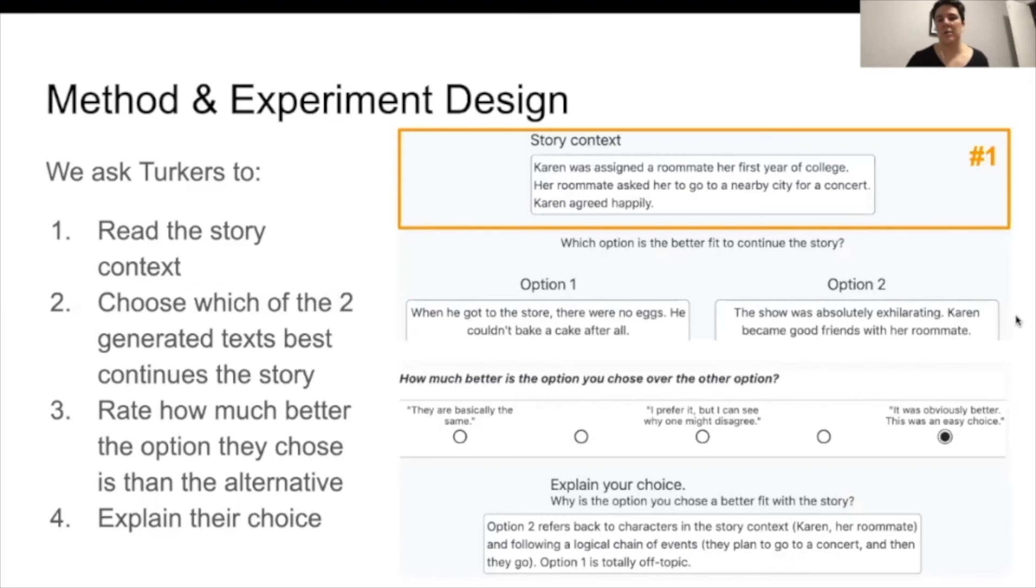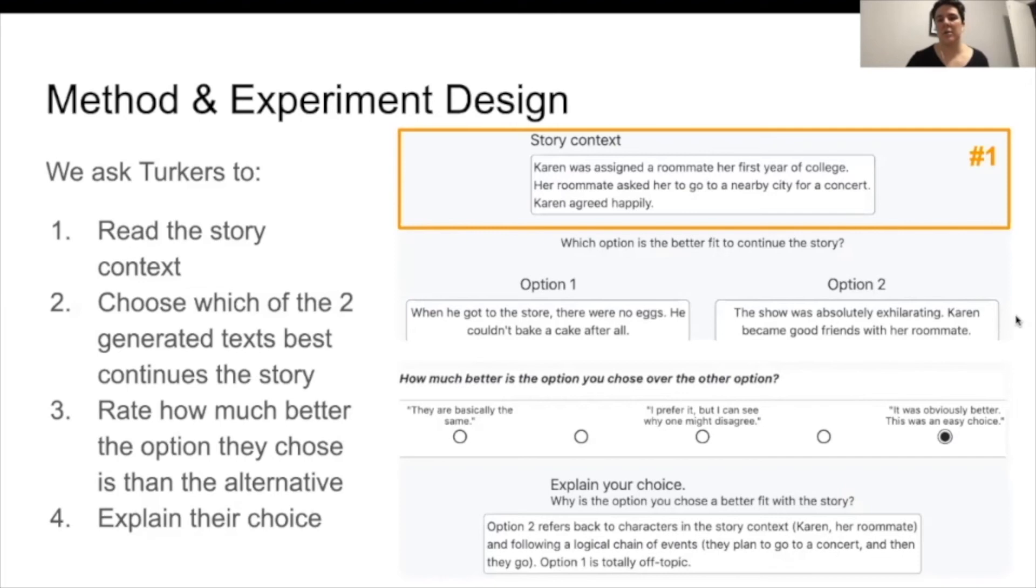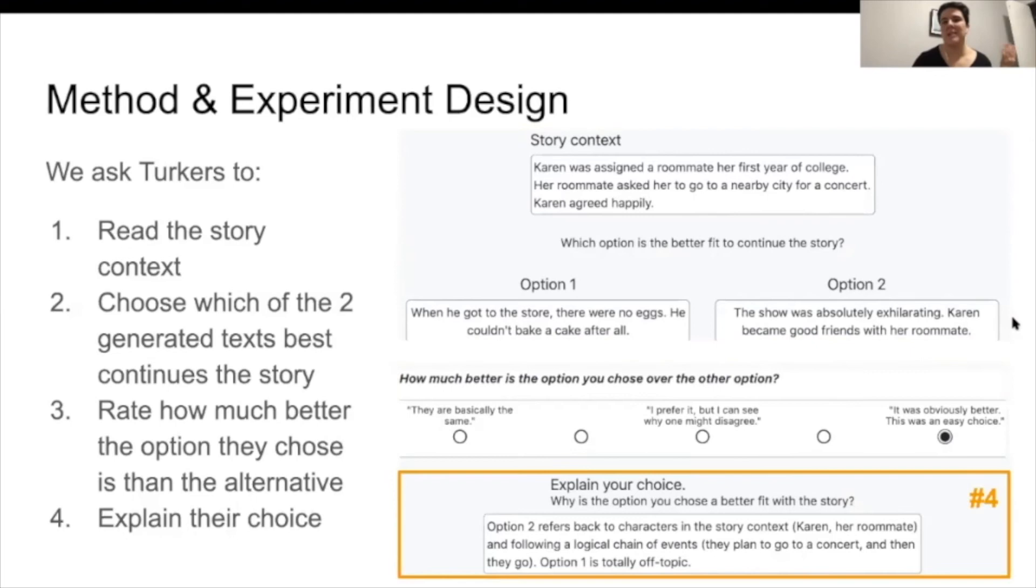And so finally for our experiment design, we asked Turkers to read the story context, the unmasked story context, choose which of two generated texts best continues the story, rate how much better their choice was, and explain their choice.